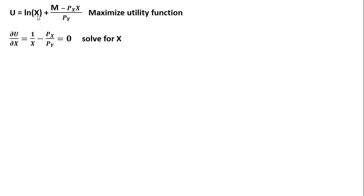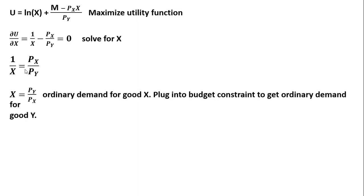The derivative of the natural log of x is just 1 over x, and then the derivative of the remainder of the utility function is just minus the price of good x over the price of good y. We're going to solve this for x. So 1 over x equals the price of good x divided by the price of good y. Multiplying both sides through by x, and then multiplying both sides through by the price of good y divided by the price of good x leaves us with the ordinary demand for good x.